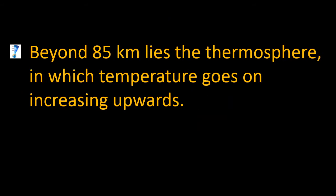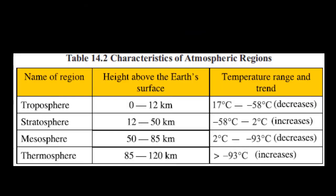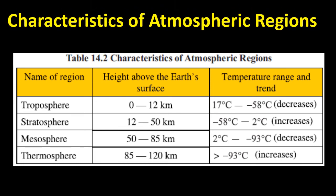Above 85 km lies the thermosphere, in which temperature goes on increasing upwards. By this simple picture, you can easily memorize the names, regions, and temperatures of the different layers of the atmosphere.